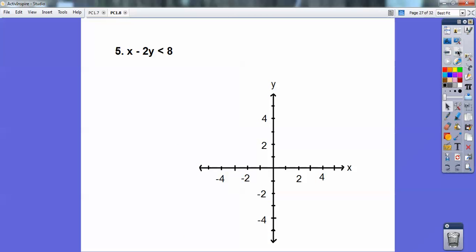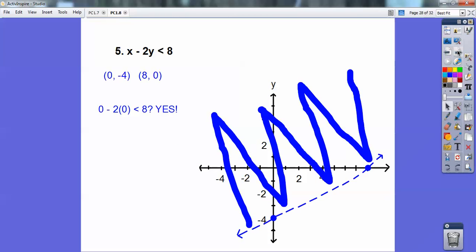How about this guy? I'm going to do my intercept methods here. When x equals 0, negative 2 goes into 8 negative 4 times. And when y equals 0, x goes into 8 8 times. So there's that right there. It's a dotted one, and test 0, 0. I made it yes, so I shade that little piece right there.